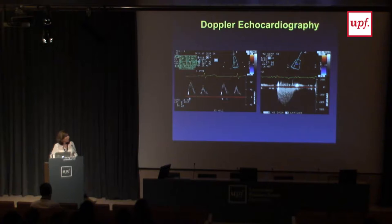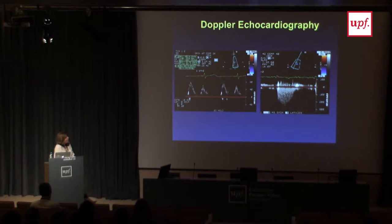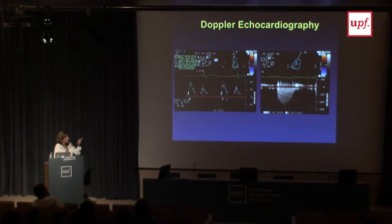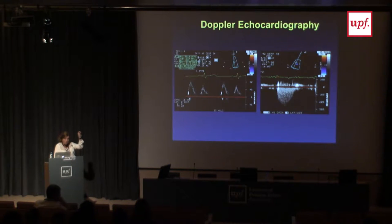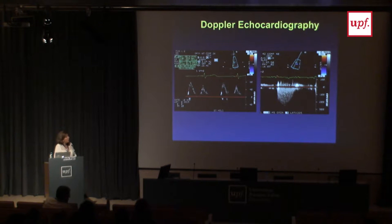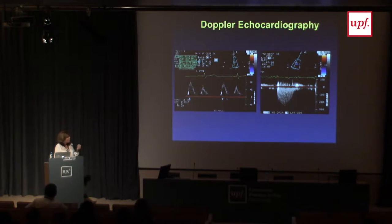Continuous wave Doppler means that the transducer is sending and receiving ultrasounds at the same time. So you can evaluate high velocity flows, but it is not good to locate exactly where the flow is. These two modalities are useful to evaluate velocities of flow inside the heart.